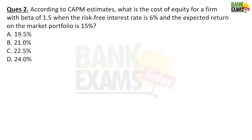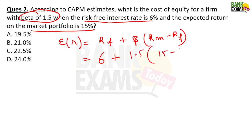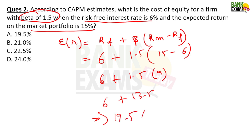Next question: the cost of equity for a firm with beta 1.5, risk-free return 6%, and expected return on the market portfolio 15%. Using ER = RF + Beta × (RM − RF): ER = 6 + 1.5 × (15 − 6) = 6 + 1.5 × 9 = 6 + 13.5 = 19.5%. Very common question in exams.